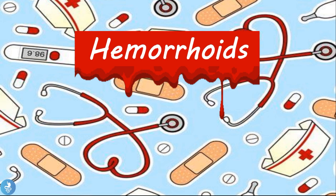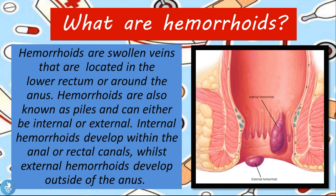Hey guys and welcome to HarderGastro. In today's video we will be talking about quite a prevalent pathology and that is hemorrhoids. So what are hemorrhoids? Hemorrhoids are swollen veins located in the lower rectum or around the anus. They are also known as piles and can either be internal or external. Internal hemorrhoids develop within the anal or rectal canals, whilst external hemorrhoids develop outside of the anus.